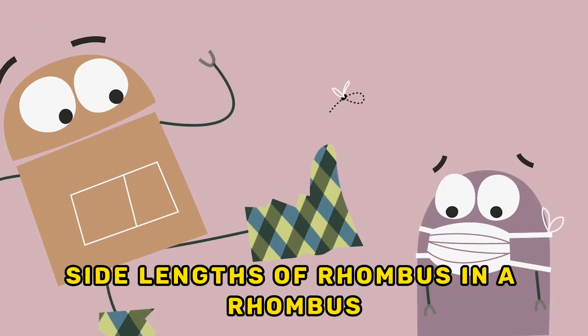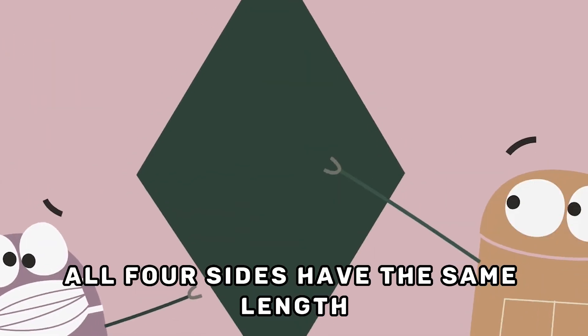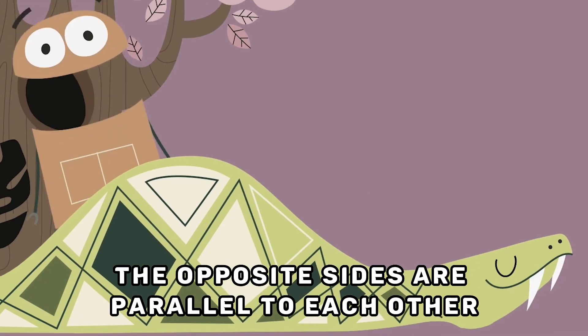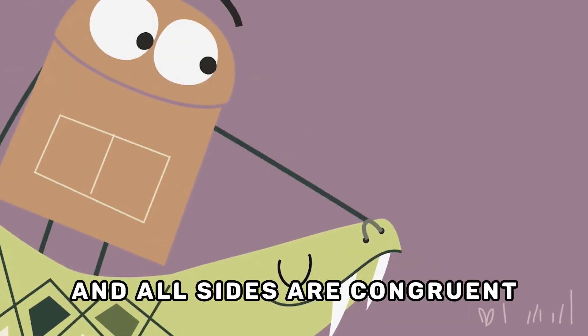Side lengths of rhombus: In a rhombus, all four sides have the same length. The opposite sides are parallel to each other, and all sides are congruent.